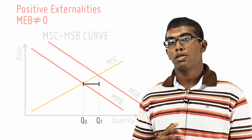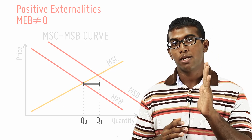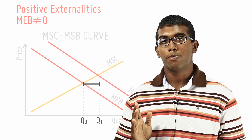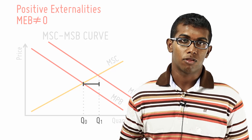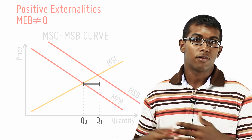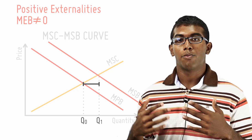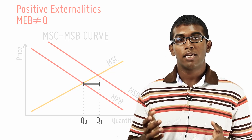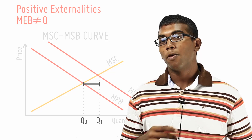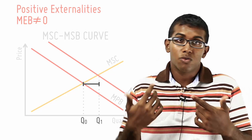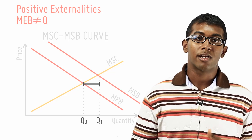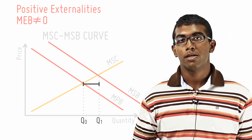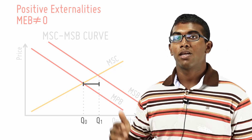You can see there's a difference between the quantity consumed by me as an individual and the socially optimal amount that should be consumed — in order to benefit society and what society deems best for it. As an individual, I either don't know about the external benefit, or I just don't care, and therefore I consume only at Q0. This is an under-consumption of education — when instead, I should be consuming at Q1.